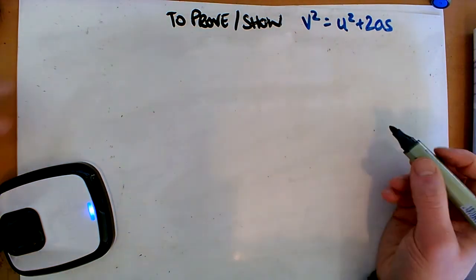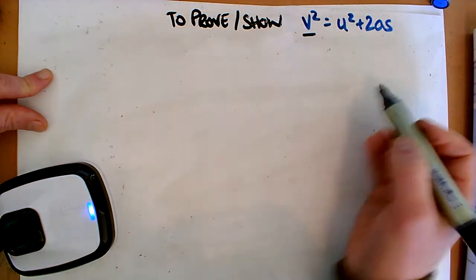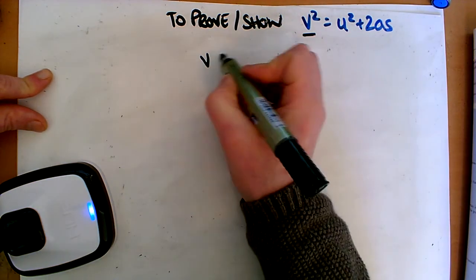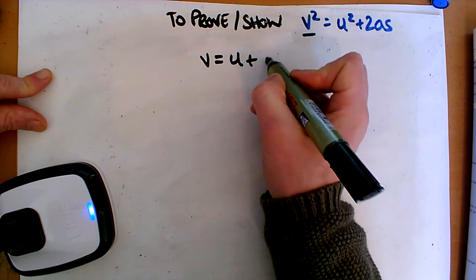Now this one is easier to start than the rest, because it's sort of a bit obvious if we just look here. So we're going to start where UVAST v = u + at.